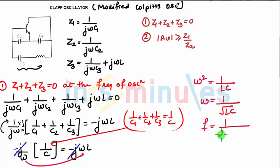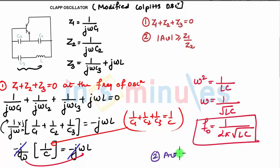So f is 1 upon 2 pi root L into C. This is the frequency of oscillation.